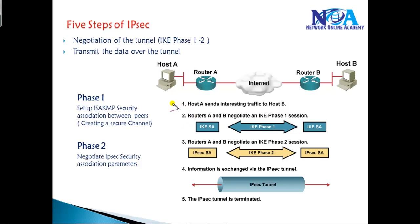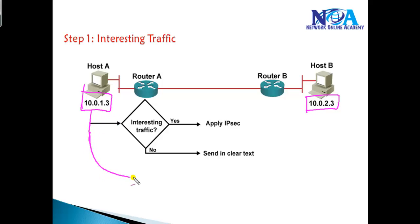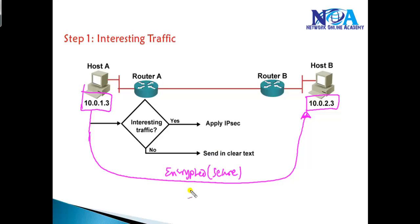The complete process goes through five steps. The first step is that the host has to send interesting traffic to the other host. For example, in my scenario, host 10.1.1.3 is trying to communicate with 10.0.2.3, and I want to ensure that any traffic going between these two hosts is in an encrypted, secure format. That is what we call interesting traffic.